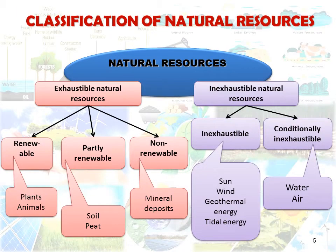Now, classification of natural resources. Natural resources are classified into two different types: first is exhaustible natural resources, and second is inexhaustible natural resources. Exhaustible means they can be exhausted or finished. Based on that, exhaustible natural resources are divided into three types: renewable, partially renewable, and non-renewable. Renewable means things like plants and animals — you can create them again.